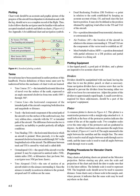Several terms have been mentioned in earlier portions of this handbook. Precise definitions of these terms must now be understood before the mechanics of chart work are learned. True course (TC): the intended horizontal direction of travel over the surface of the Earth, expressed as an angle measured clockwise from true north, 000 degrees through 360 degrees.